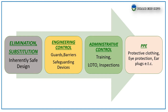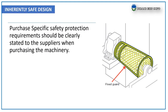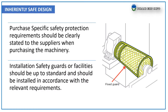Let me elaborate on this hierarchy of mechanical safety controls. The first one — elimination or substitution — inherently safe design: purchase-specific safety protection requirements should be clearly stated to the suppliers when purchasing the machinery. Installation of safety guards or facilities should be up to standard and in accordance with the relevant requirements.